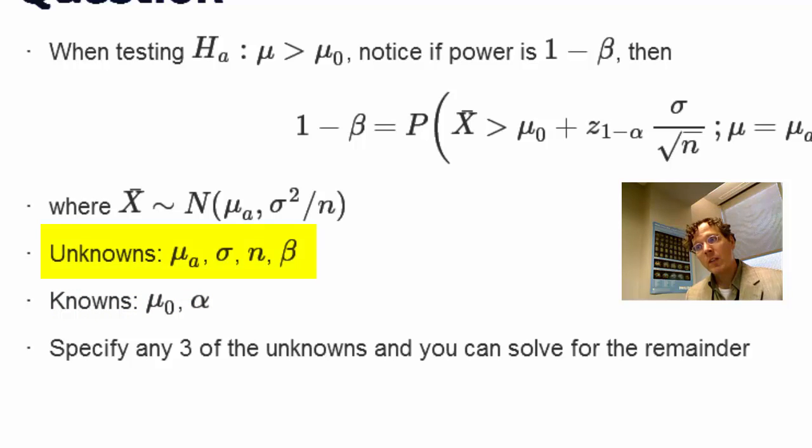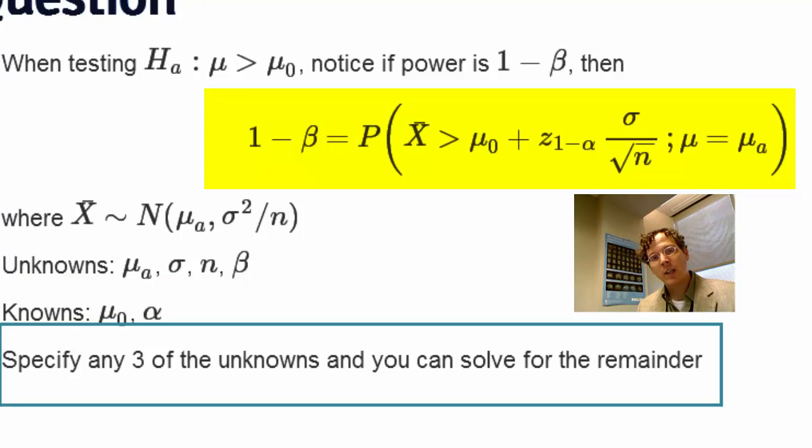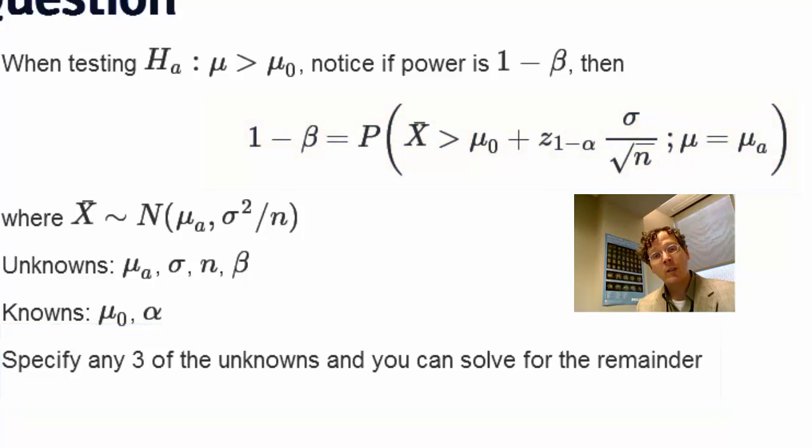So given these four unknowns and our two knowns, this is simply an equation. If you specify any three, you can solve for the fourth. So if you know the alternative mean that you'd like to detect, a sigma that you're willing to assume, the n that you want, then you can solve for power like we've done previously.